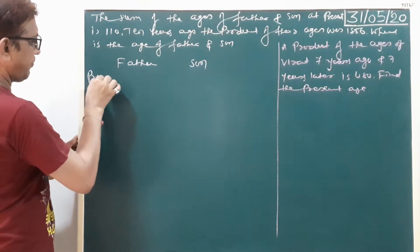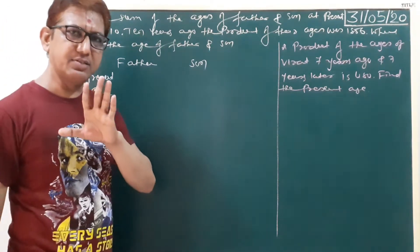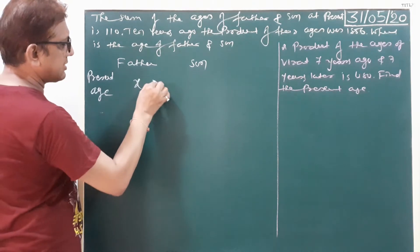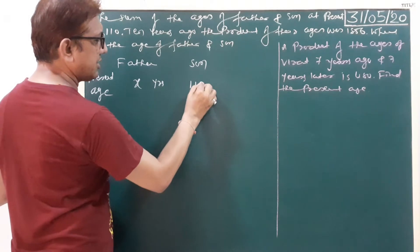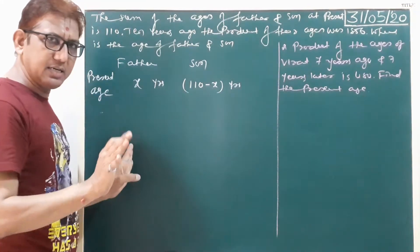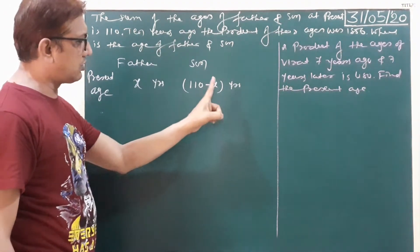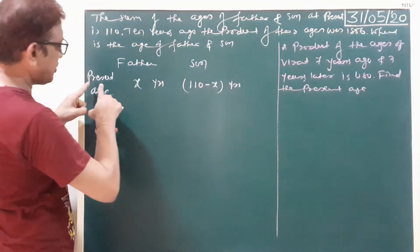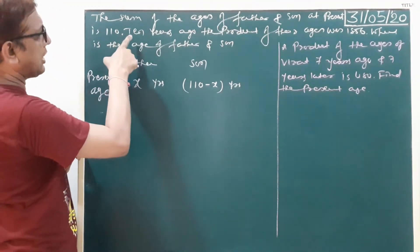First we write present age. We suppose the father's present age as X years. So son's present age is 110 minus X years. Father's age was X years, son's age was 110 minus father's age. This is your present age.